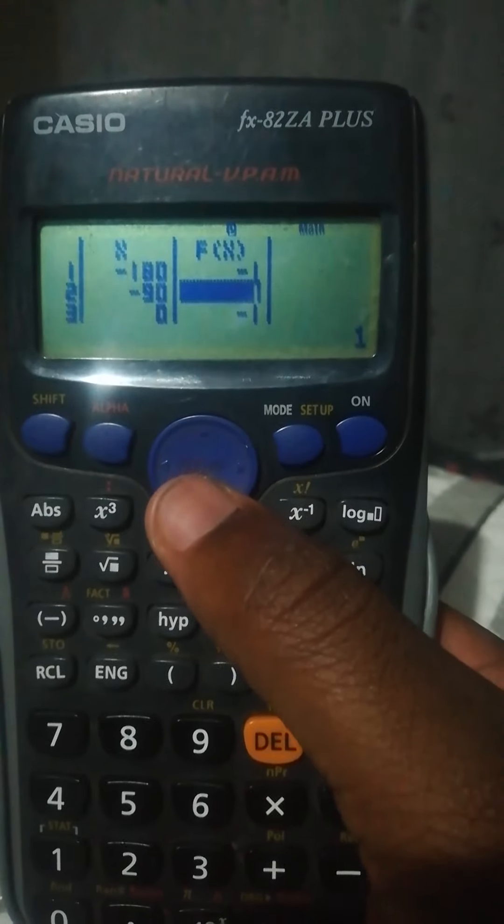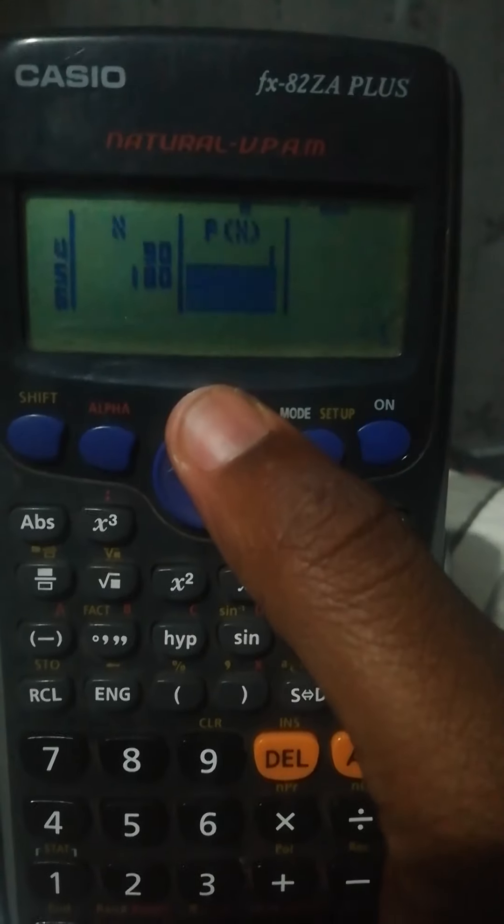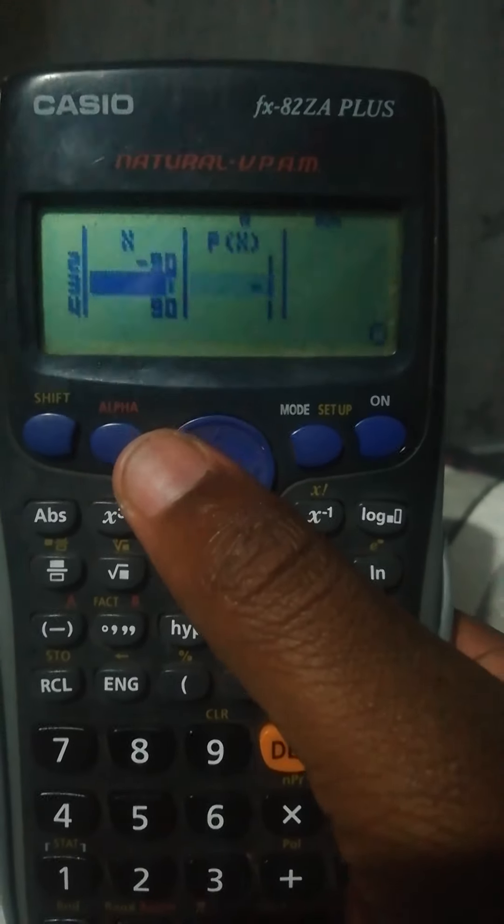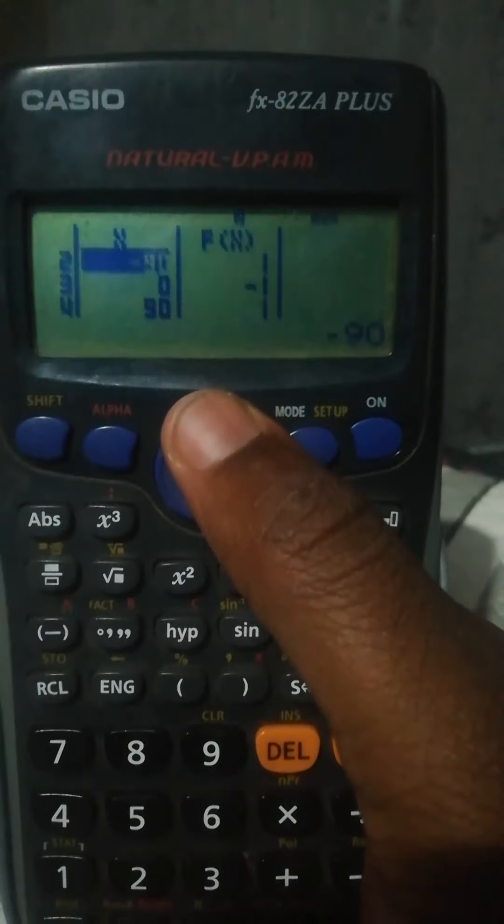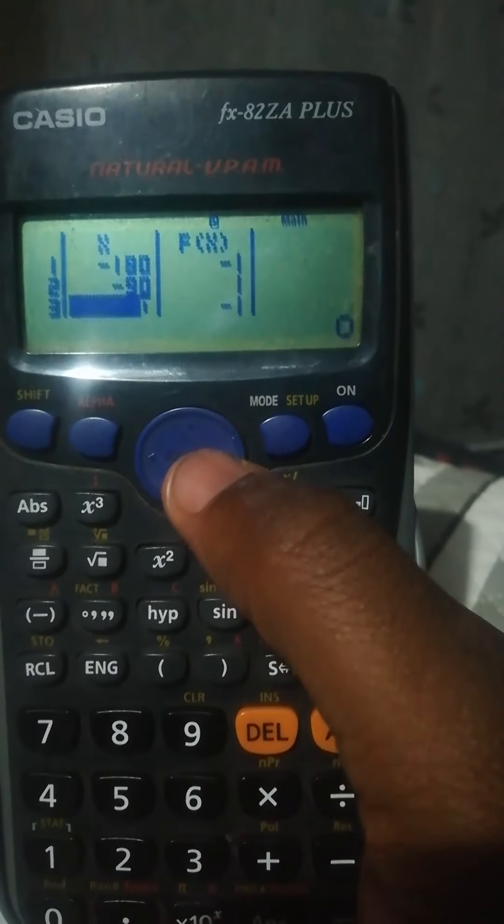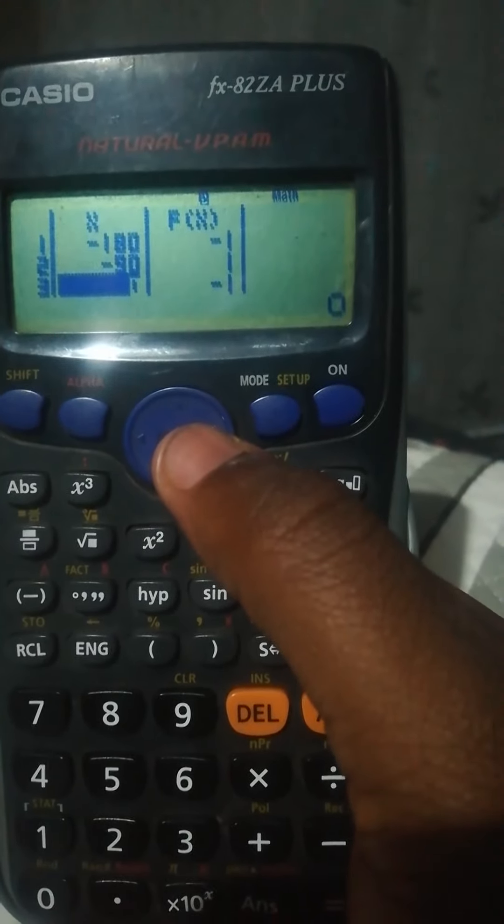And then you press equals. When x is 180, your y will be -1. And then when x is -90, your y will be 1, and so on.